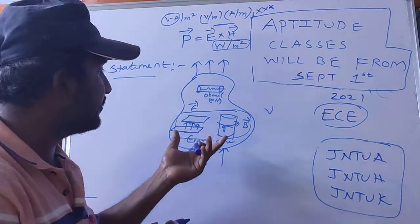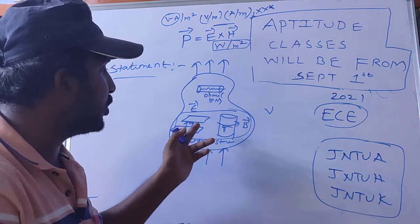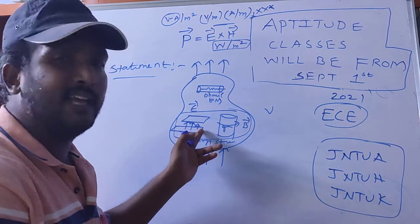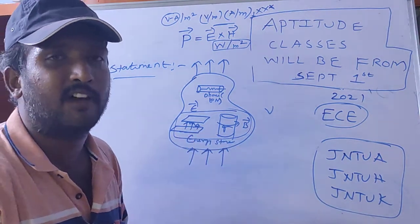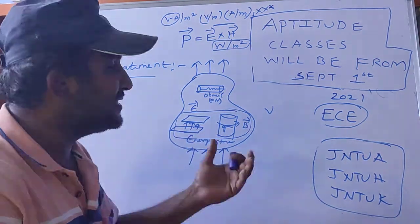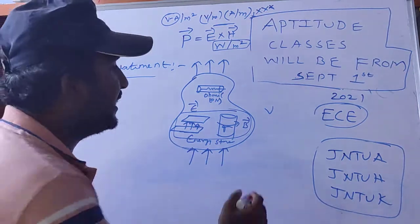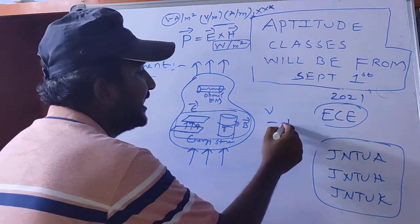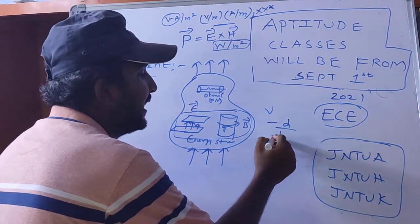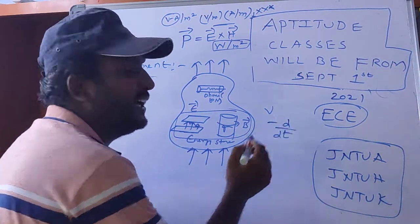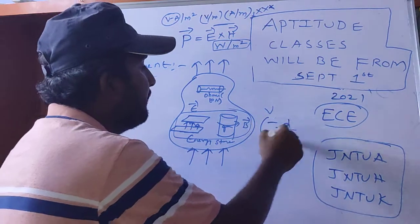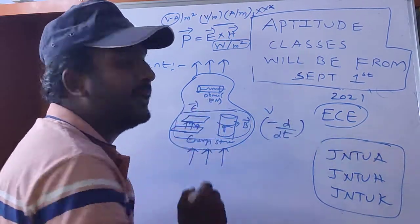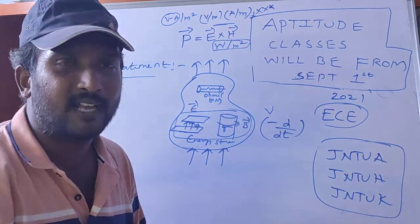The energy stored includes both electric and magnetic energy. The time rate of decrease is indicated by minus d by dt, and then minus the ohmic losses.